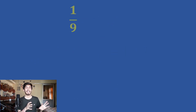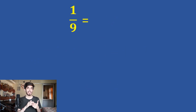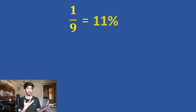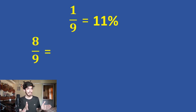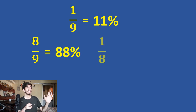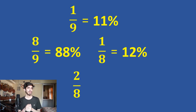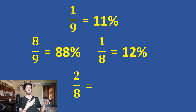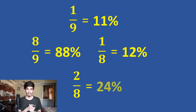Now 1 by 9 is a really easy one — it is 0.1111... and so on. So if someone asks what is 8 by 9, it is 0.8888..., that is 88%. Quickly tell me: what is 1 by 8? It is 12%. So what is 2 by 8? It is 24%.